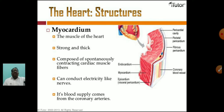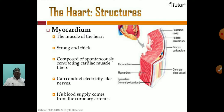The heart is made of myocardium — strong, thick muscle composed of spontaneously contracting cardiac muscle fibers that can conduct electricity like nerves. Its blood supply comes from the coronary arteries, which are most important. When a coronary artery is blocked, a person faces a problem called a heart attack.